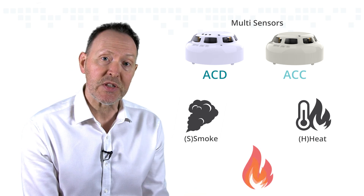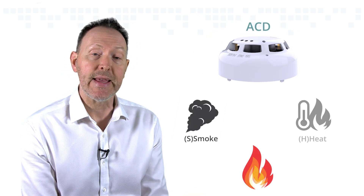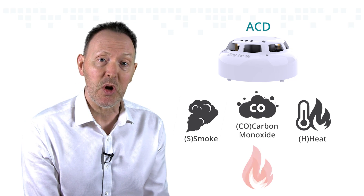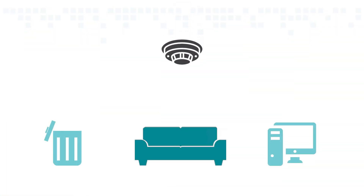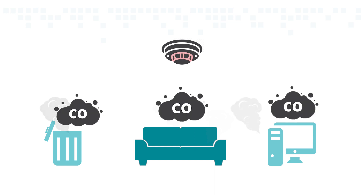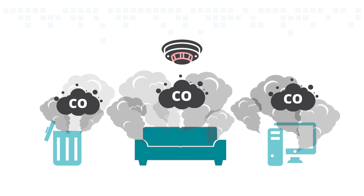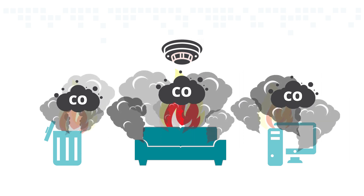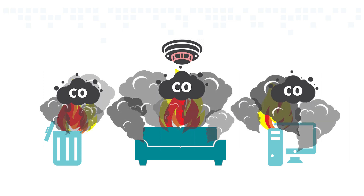But the ACD has been developed with three sensing elements: smoke, heat, and carbon monoxide or CO. Traditionally, CO detection is integrated into a multi-sensor to assist with very early detection of smouldering fires, which release CO gas usually before the presence of visible smoke or flames.